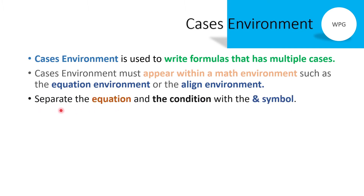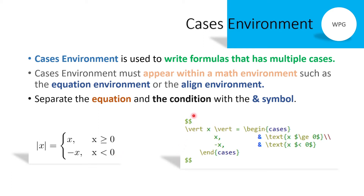In the cases environment, separate the equation and the condition with the ampersand symbol. For example: |x| equals x when x is greater than or equal to zero, and |x| equals minus x when x is less than zero. To write this, first enter math mode using the double dollar symbol, then write the equation using the vertical bar command for absolute value, then start the cases environment with begin cases and end cases. Write the first case as x, then the ampersand symbol, then the text condition x greater than or equal to zero.